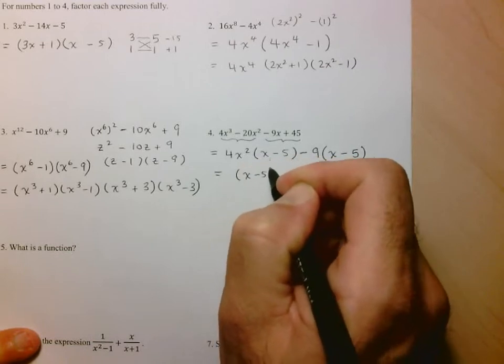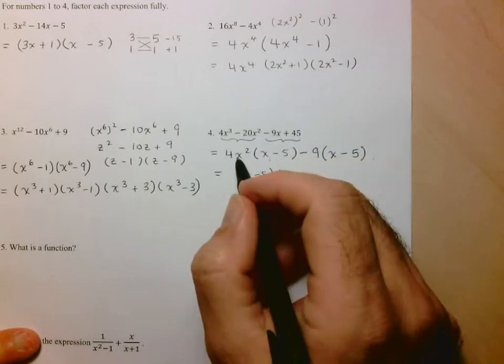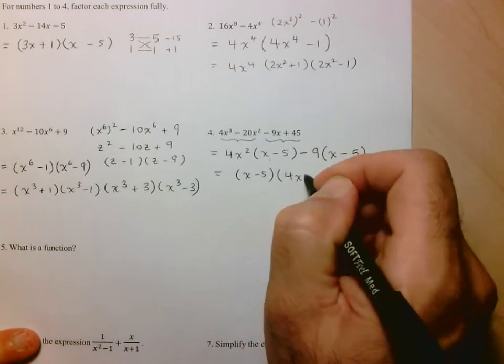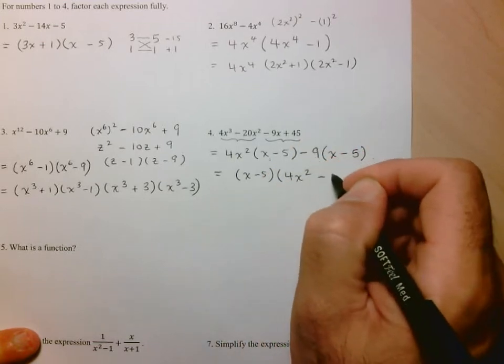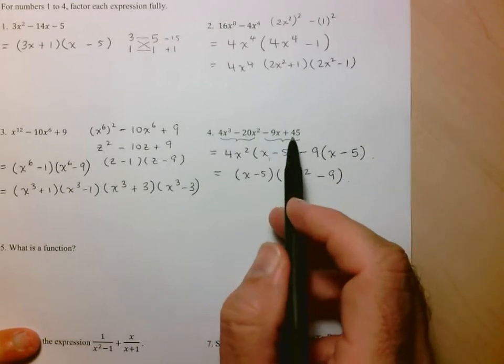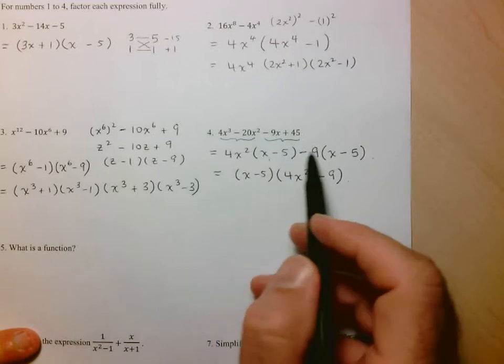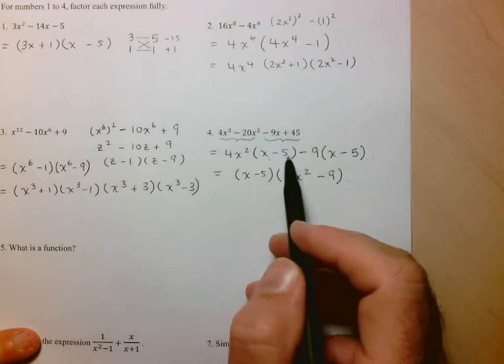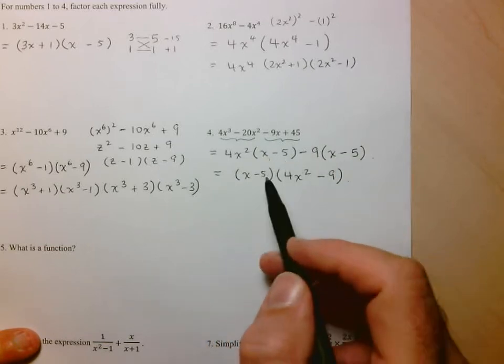So here grouping is going to work, because I now have, in these two terms, a common factor of x minus 5. So I remove the common factor of x minus 5, and we're left with, in the first part, 4x squared, and in the second part, minus 9. So this is how grouping works. The first two, the last two, factor each pair individually, and if you end up with a common factor in brackets, you can keep going.